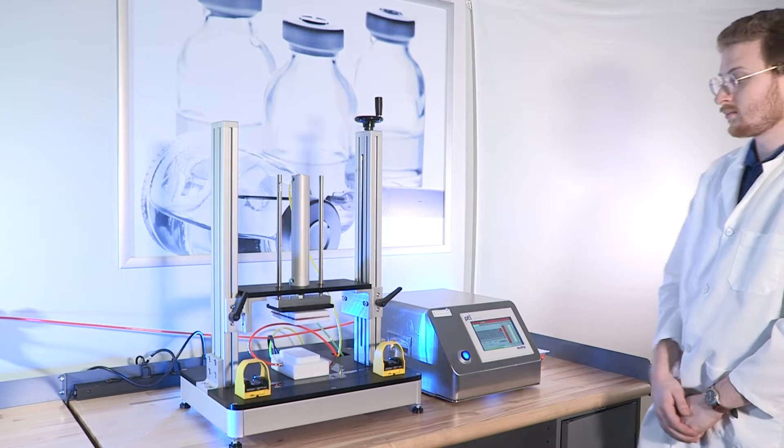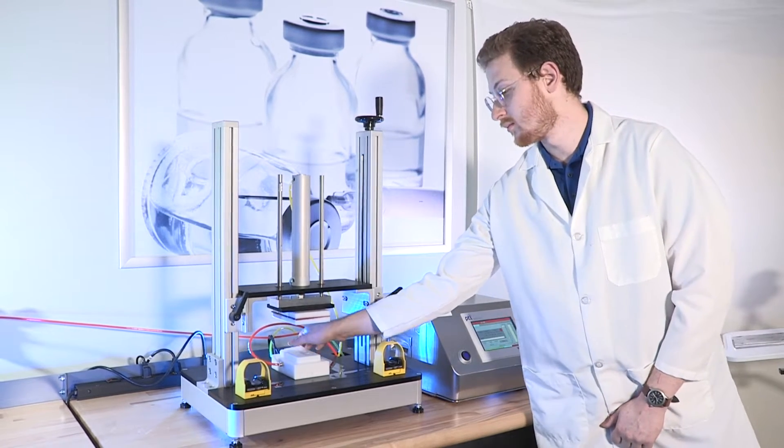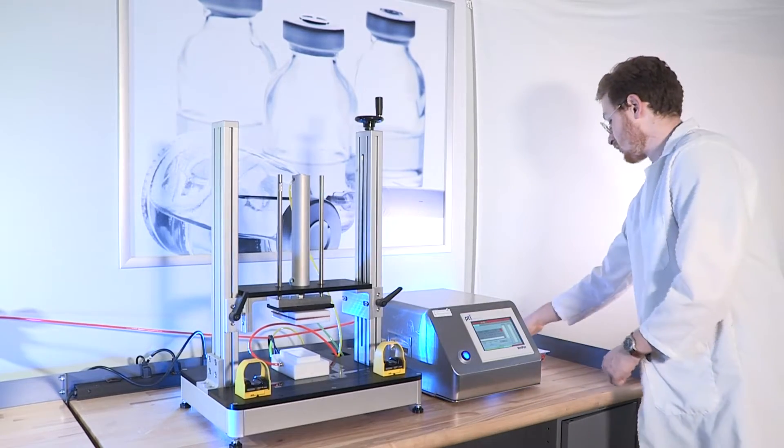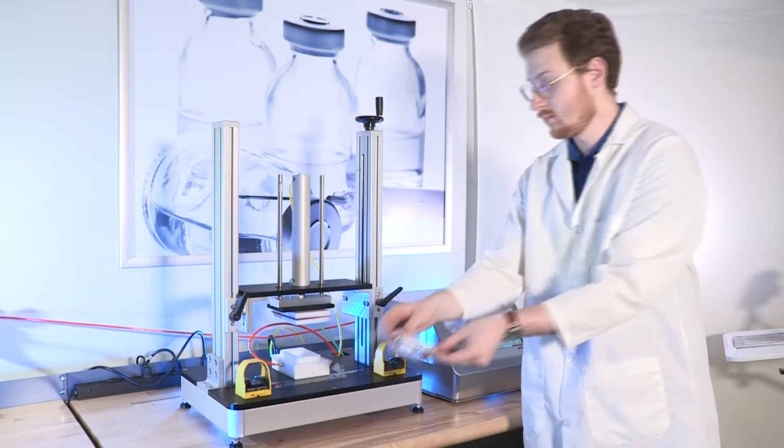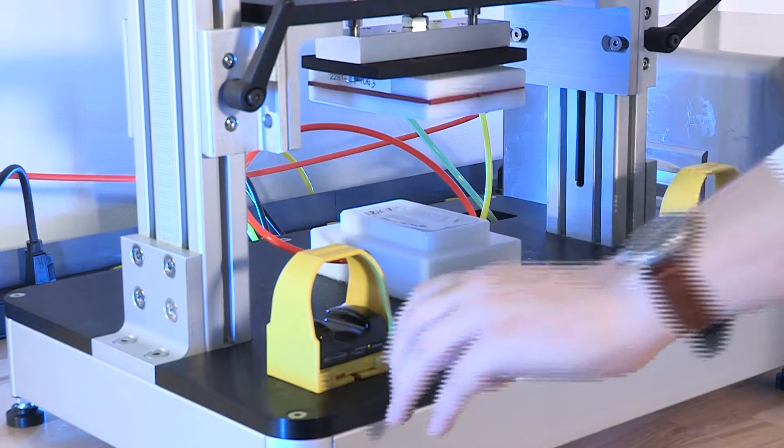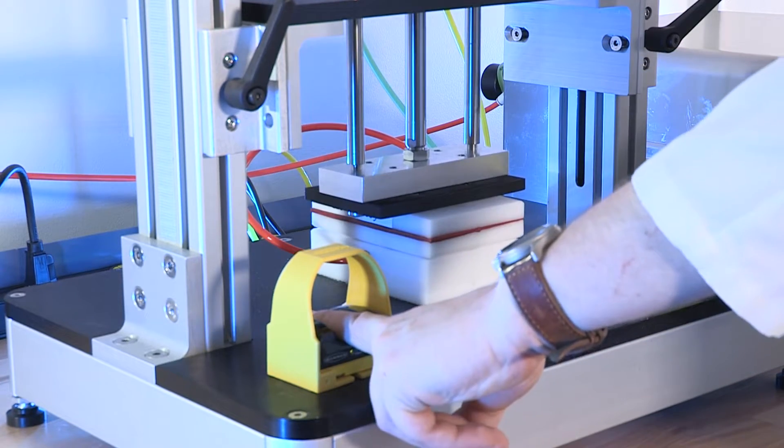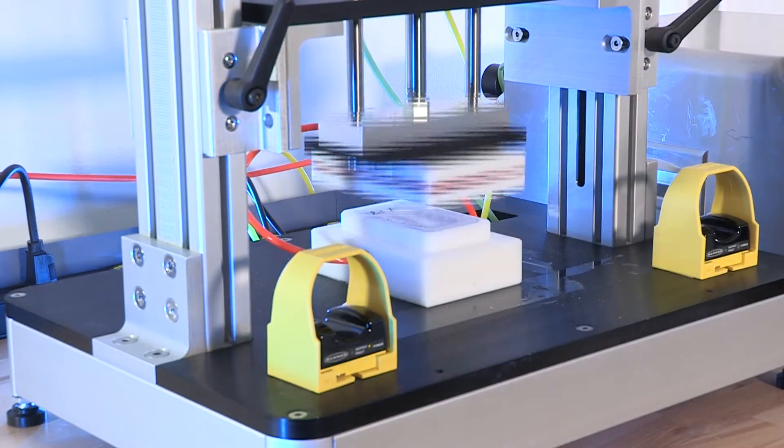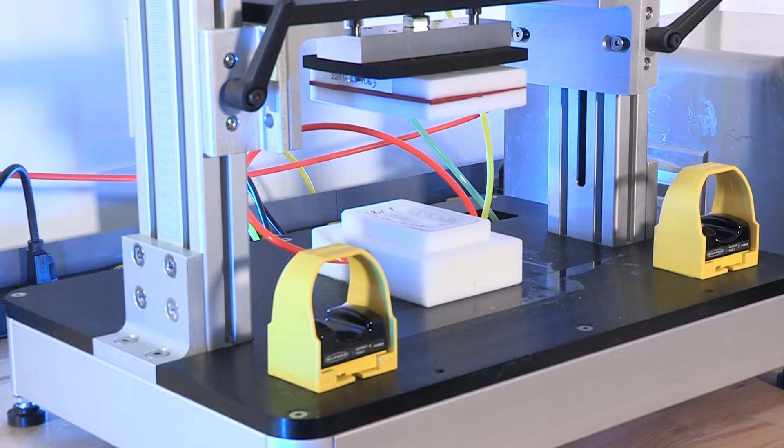The VariPak series of machines utilizes the ASTM F2338 Vacuum Decay Standard for its test method. That same ASTM standard was also originally developed utilizing PTI equipment.